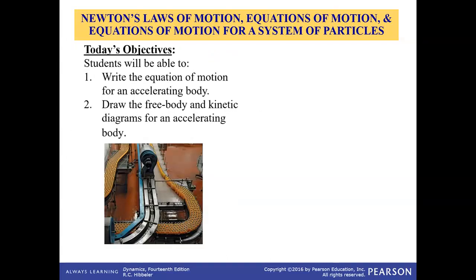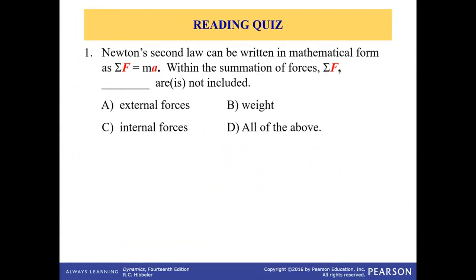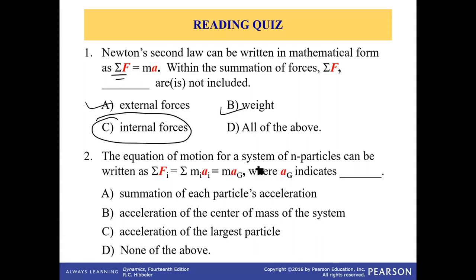Today's objective is to write equations of motion for an accelerating body in rectangular coordinate system, and draw the free body diagram and kinetic diagram for an accelerating body. Newton's second law in mathematical form is sigma F equal to ma. The summation of forces includes only external forces — internal forces are not included. The equation of motion for a system of n particles is written as sigma Fi equal to mi times ag, where ag indicates the acceleration of the center of mass of the body.